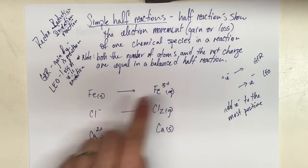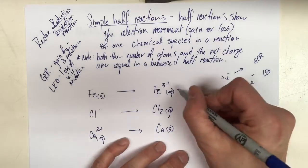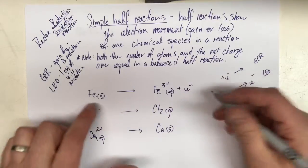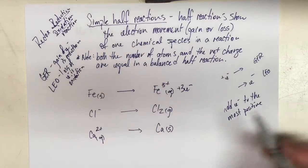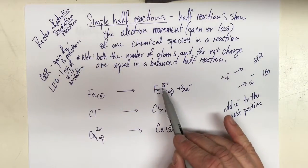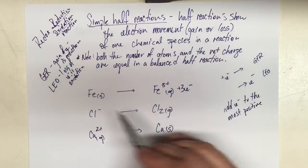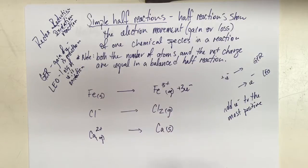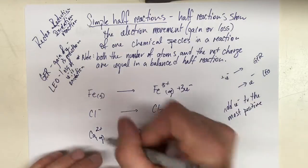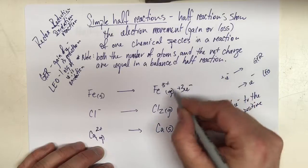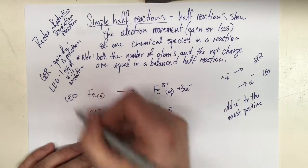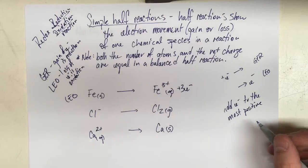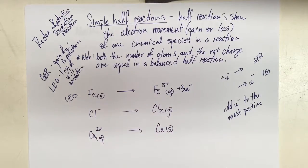Obviously three positive is more positive than zero, so I'm going to add the electrons to that side. This side has zero charge, this side has positive three, so I need three electrons — three positive and three negative is zero, giving zero net charge on both sides. This is a balanced half reaction. Since the electrons are a product, iron is losing electrons, so it is an oxidation half reaction. Iron is being oxidized to produce iron³⁺ and three electrons.